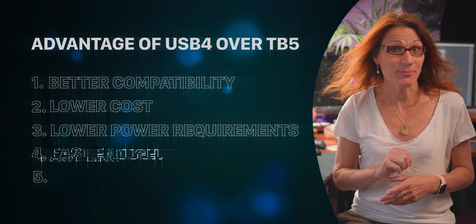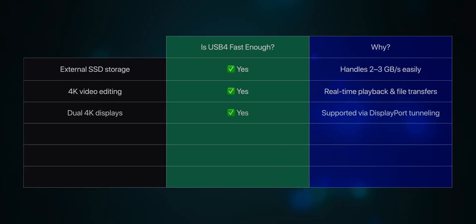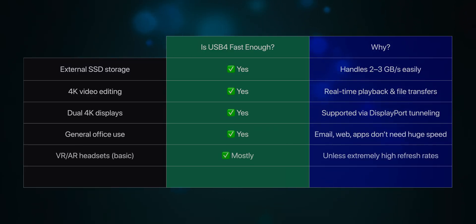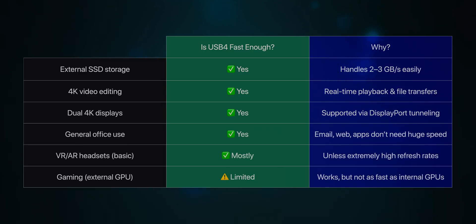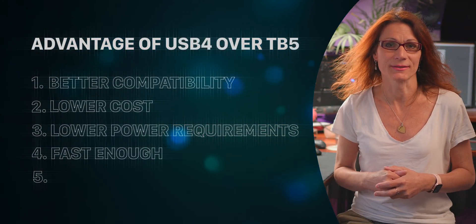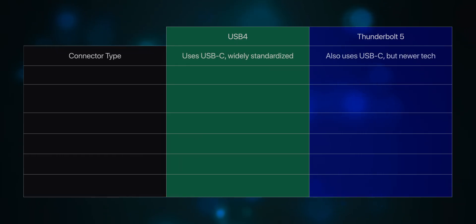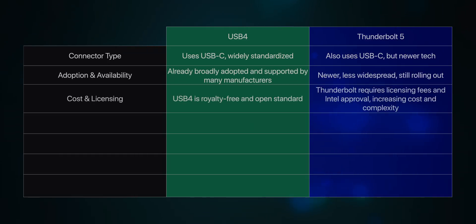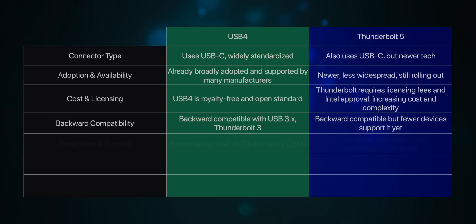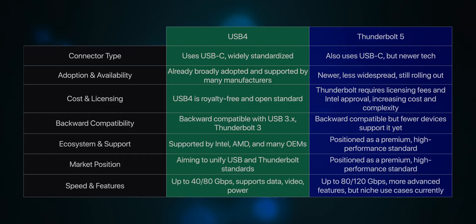Fourth, good enough speed for most use cases. USB 4 version 2.0 supports up to 80 Gbps, which is comparable to early Thunderbolt 5 implementations. Most consumer SSDs can't fully saturate even USB 4 version 1.0 at 40 Gbps. So in practice, real-world performance may be similar for many use cases. Fifth, easier to find on non-high-end laptops — many laptops support USB 4 but not Thunderbolt 5, especially AMD-based laptops or lower-cost Intel machines.